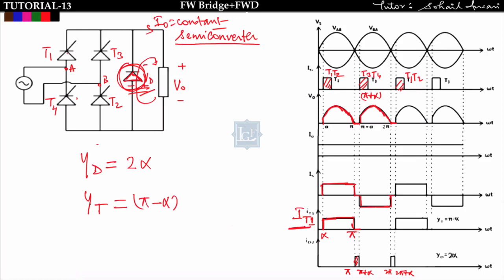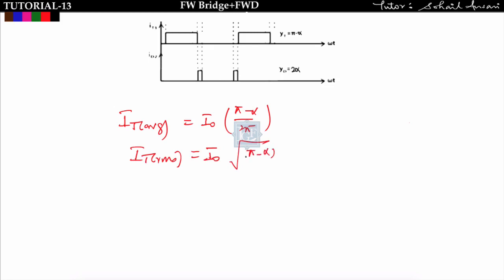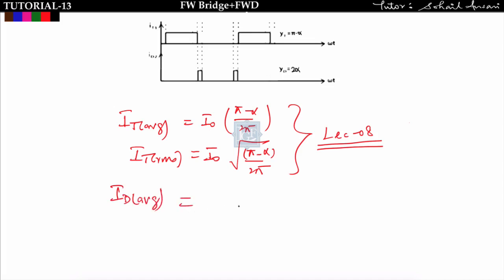So the conduction angle of the diode is 2α and the conduction angle of the thyristor is (π − α). In this case also, the conduction angles of the diode and thyristor are not equal. IT_average = I0 × (π − α) / 2π. IT_rms = I0 × √[(π − α) / 2π]. ID_average = I0 × 2α / 2π. ID_rms = I0 × √[2α / 2π]. These four values must be kept in mind.